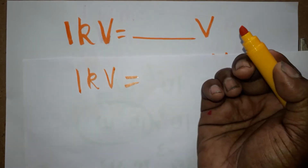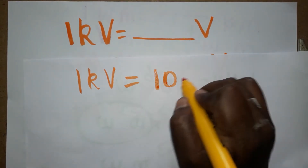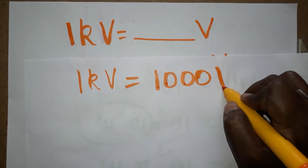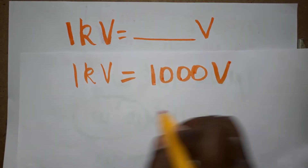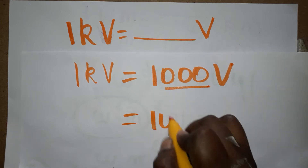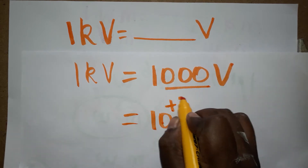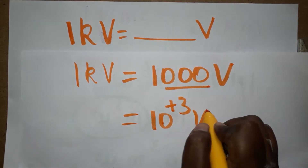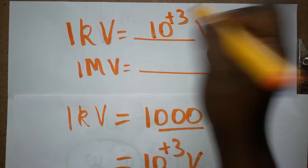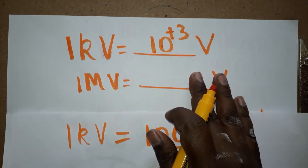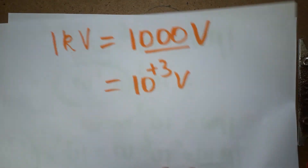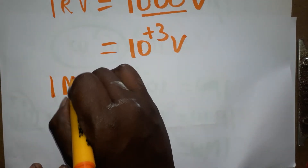So one kilovolt is equal to how many volts? One kilovolt is one thousand volts — very simple. We can write three zeros: that is 10 to the power plus 3 volts.